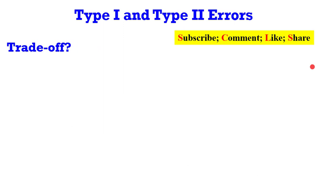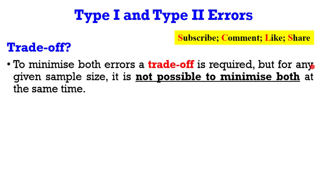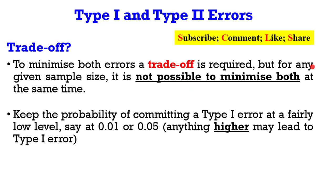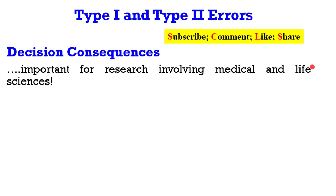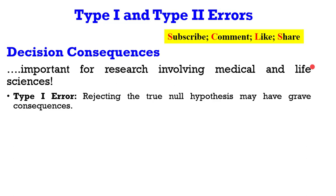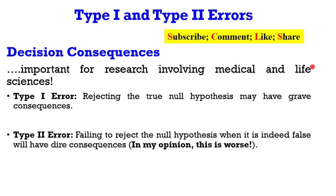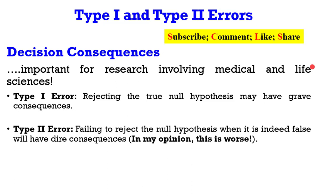What is the trade-off in committing a type 1 and a type 2 error? To minimize both errors, a trade-off is required, but for any given sample size it is not possible to minimize both errors at the same time. Keep the probability of committing a type 1 error at a fairly low level — say 1 or 5 percent. Anything higher will lead you to commit a type 1 error. Likewise, minimize the probability of committing a type 2 error as much as you can. This is particularly important for research in medicine and life sciences. For type 1 error, rejecting the true null leads to grave consequences. For type 2 error, failing to reject a false null has dire consequences. In my opinion, committing a type 2 error is worse.